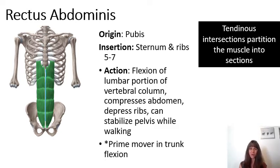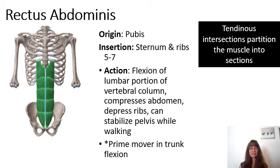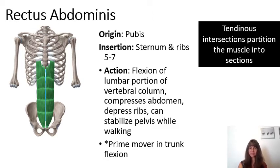The linea alba is dense regular connective tissue connecting both sides of the rectus abdominis. When a woman becomes pregnant, the hormones circulating in her body will change the linea alba into a linea nigra — a dark-colored line — due to circulating hormones during pregnancy. Sometimes that portion of the rectus abdominis may tear under extreme stress, causing a condition known as diastasis rectus. The word diastasis means separation.